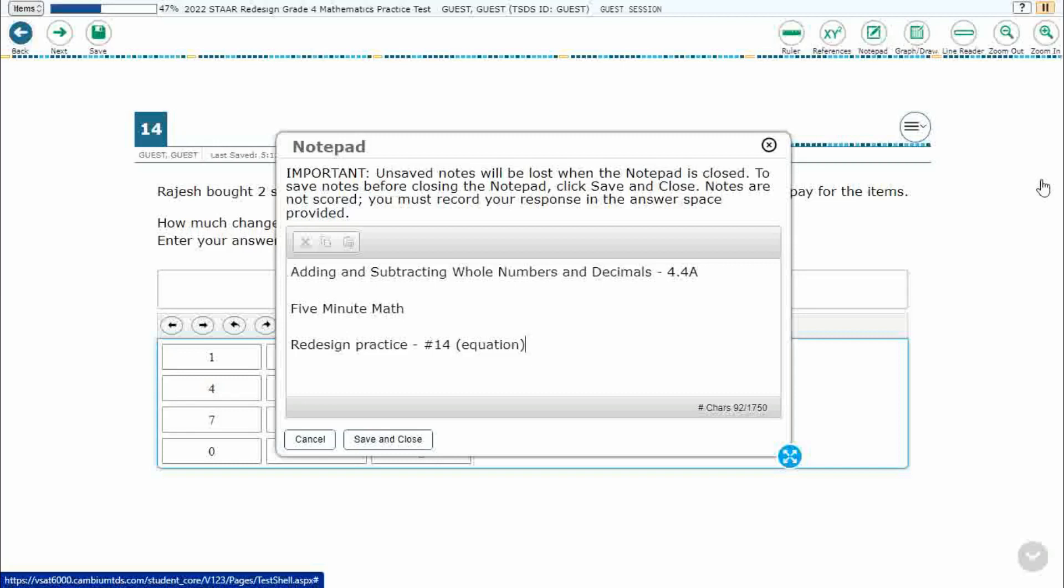Hello and welcome to 5-Minute Math. Today we are looking at the fourth grade concept of adding and subtracting whole numbers and decimals. This is standard 4.4a in the great state of Texas and we are using item number 14, which is a new item type called equation editor of the redesigned practice online STAAR test.